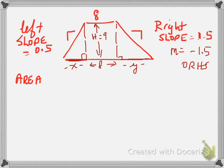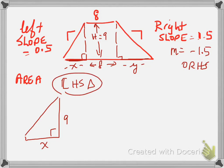So we know that the area of this trapezoid is going to be the area of this rectangle plus the area of the two triangles on the sides. So, how are we going to attack this problem? First of all, what we're going to do is attack the triangle on the left-hand side. We know that the slope on the left-hand side triangle, the slope is equal to 0.5.